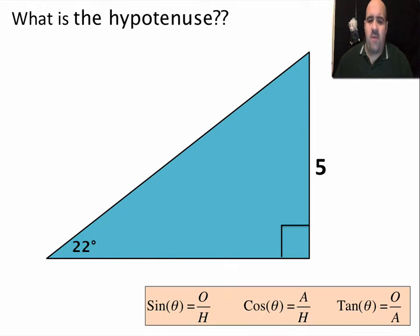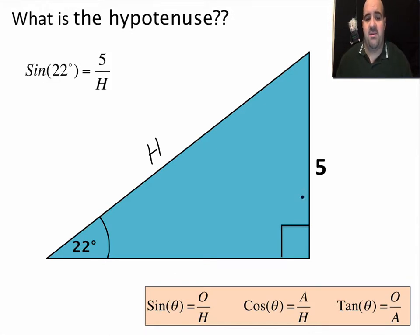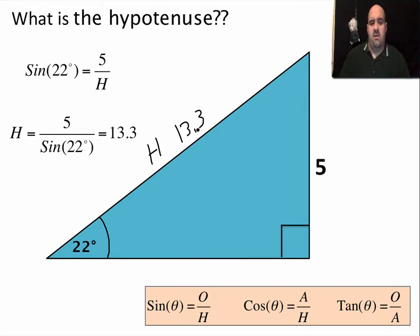Problem 1: What is the hypotenuse? We know the angle theta is 22 degrees, and we know the opposite side is 5. Since we have opposite and hypotenuse, we use the sine function. Sine 22 = 5 divided by h. Rearranging: h = 5 divided by sine of 22 degrees. Make sure your calculator is in degree mode — the answer is 13.3.